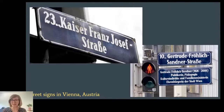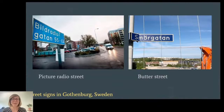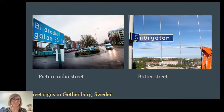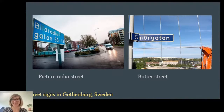Gothenburg is Sweden's second biggest city, located on the west coast, and there were loads of, to me, funny and unusual street names. For example, I found a picture radio street and a butter street. I had just started to learn Swedish, so it was really fun to walk around and translate all these street names. I found a trumpet street, a tomato street, a telescope street, and one friend lived on Spring Onion Street and another on Summer Weather Street. I found that really interesting and fun, and not only the interesting street names — I also found clusters of street names with similar names.